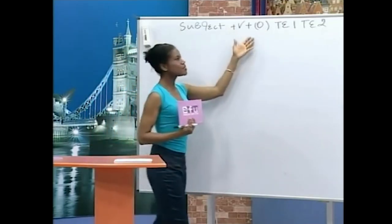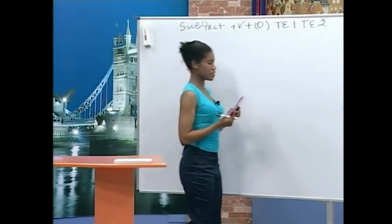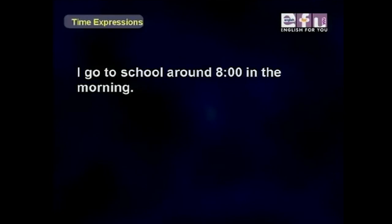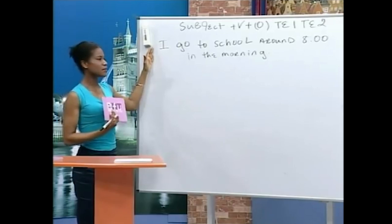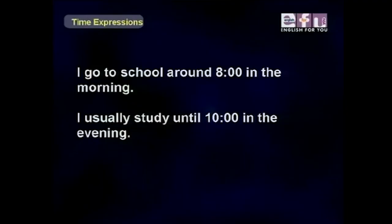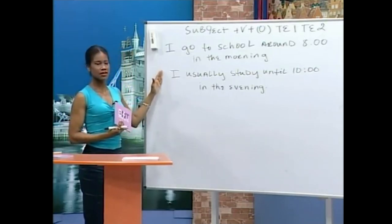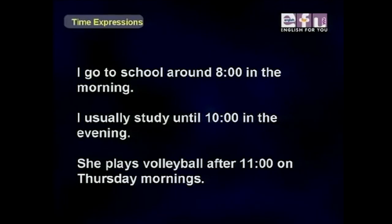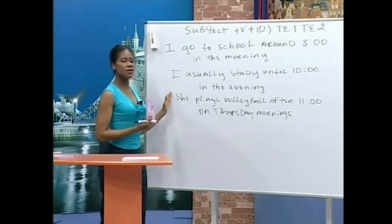For example: I — subject; go — verb; to school — object; around 8 o'clock — first time expression; in the morning — second time expression. So: I go to school around 8 o'clock in the morning. Next example: I usually study until 10 o'clock in the evening. She plays volleyball after 11 o'clock on Thursday mornings.